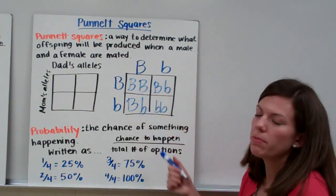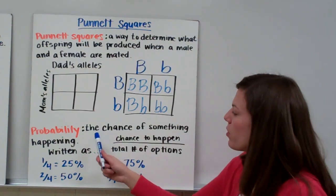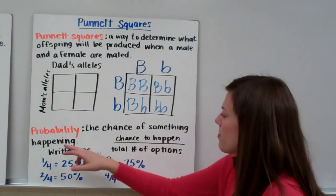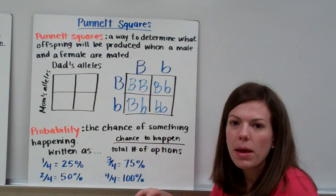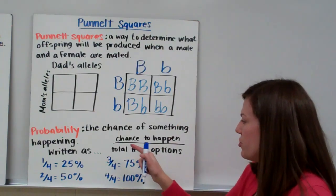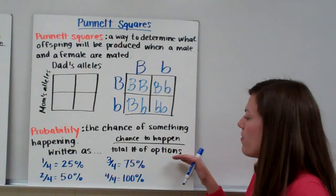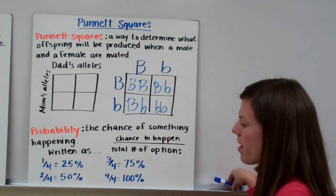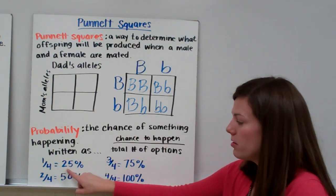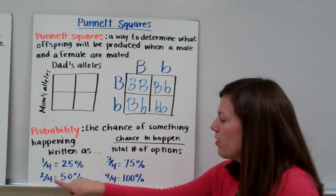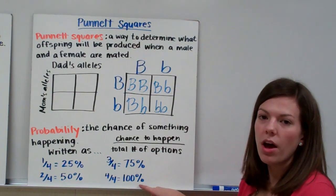Based on what's inside the Punnett square, we can figure out the probability of having different types of offspring. Probability means the chance of something happening — the chance of having a brown or a white baby. Probability is written as the chance of that thing happening over your total number of options. Remember: 1 out of 4 is 25%, 2 out of 4 is 50%, 3 out of 4 is 75%, and 4 out of 4 is 100%.